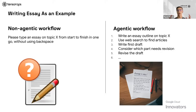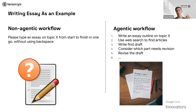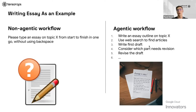On an agentic workflow, you tell it to write an essay on a topic, and it will say maybe I need to go search the web for some information. It will write the first draft, then evaluate it, and if it doesn't look good, it will redo it — continuing until it finds a satisfying answer. This is much more akin to what humans do, where they are much more autonomous, plan ahead, and can adapt on the fly. This is where Andrew NG's quote really shines.